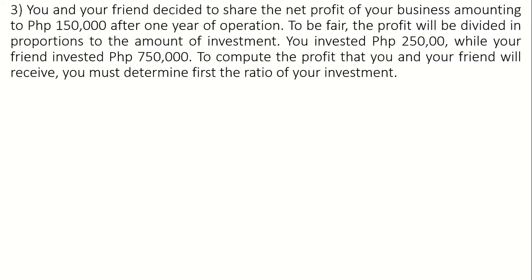Let's proceed to problem number three. When you read a word problem, it is always important to understand what you are reading. Problem number three: You and your friend decided to share the net profit of your business amounting to 150,000 pesos after one year of operation. The profit will be divided in proportion to the amount of investment. You invested 250,000 pesos while your friend invested 750,000 pesos. To compute the profit each will receive, you must determine first the ratio of investment.